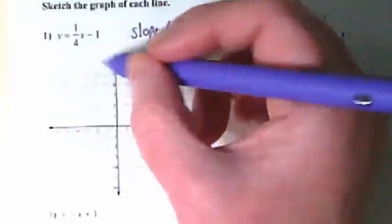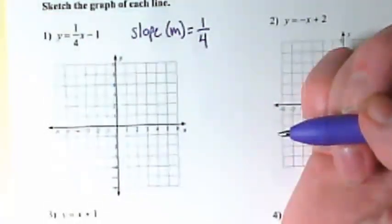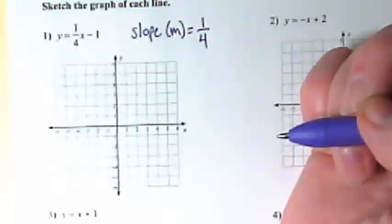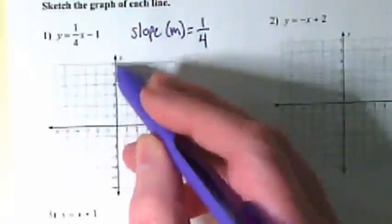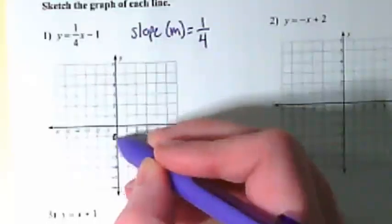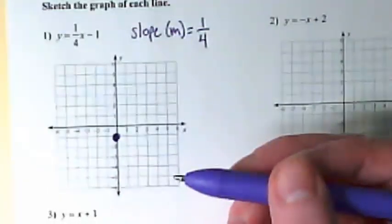What is our b in this? And that's where we start. We're going to look at the y-axis and put a point at negative one.